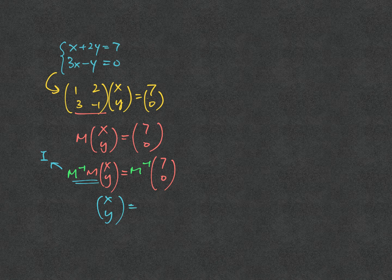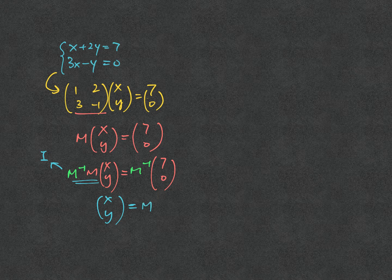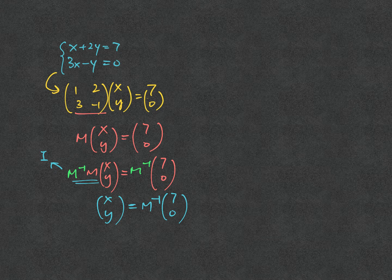So in order to solve for x, y, then you need to know what is M inverse and multiply it to (7, 0). Now the question turns to how you can find M inverse.